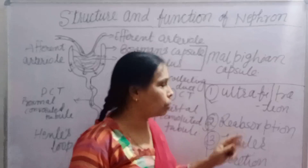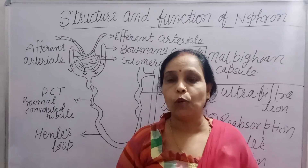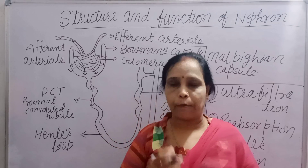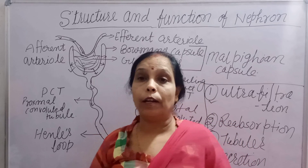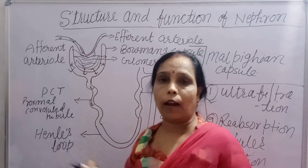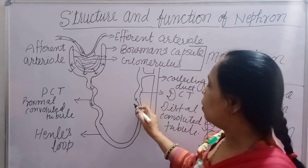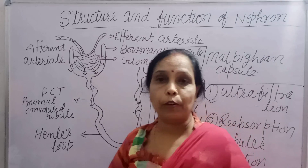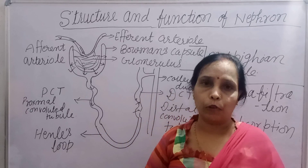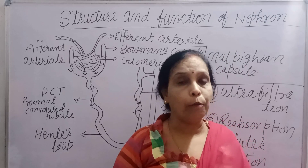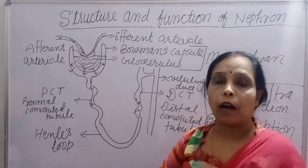The next function is tubular secretion, where harmful materials such as drugs and foreign chemicals that were not filtered out are secreted in the DCT. Substances like acid, ammonia, sodium, potassium, and chloride are also secreted here. This results in the formation of urine.